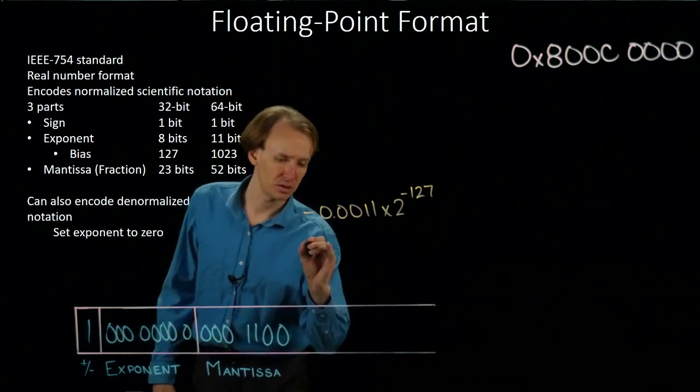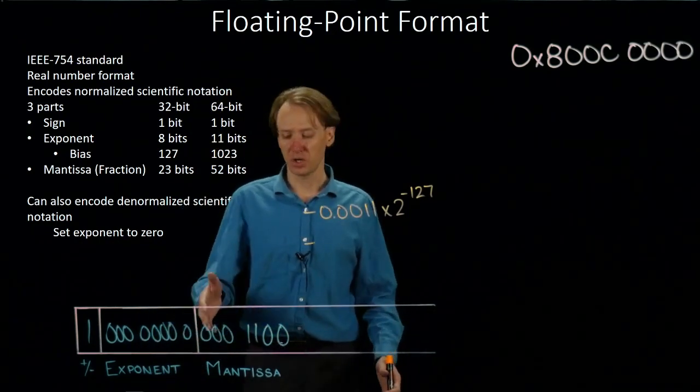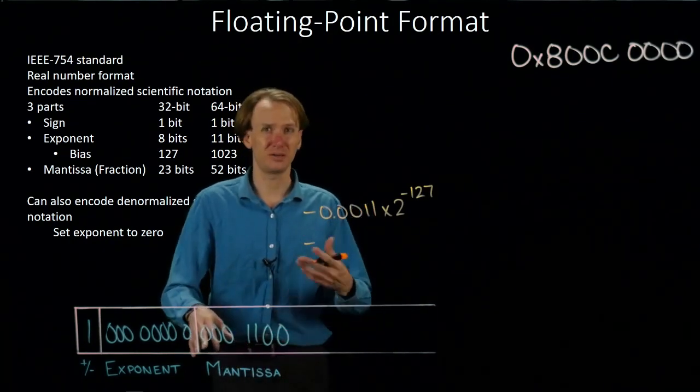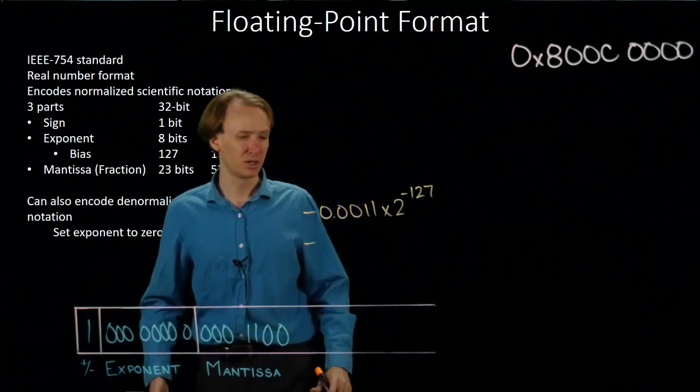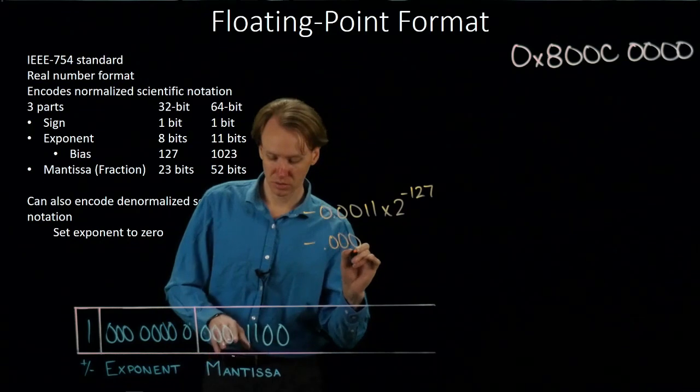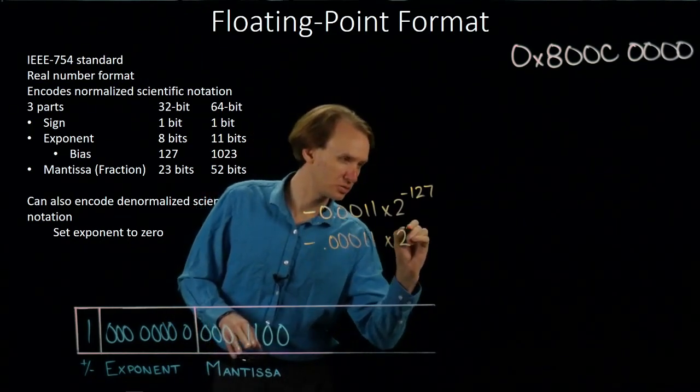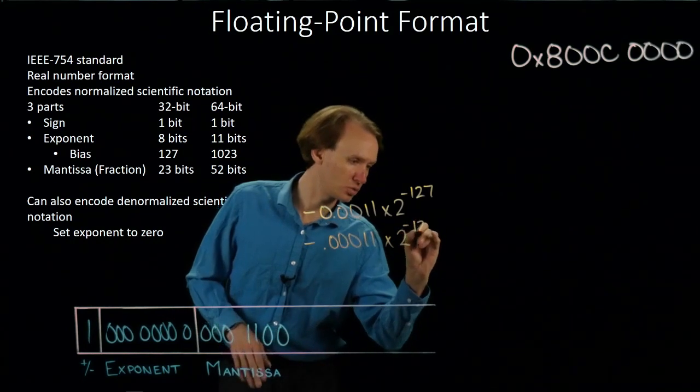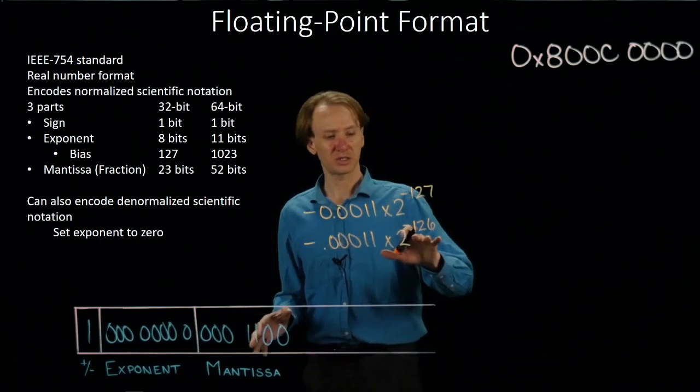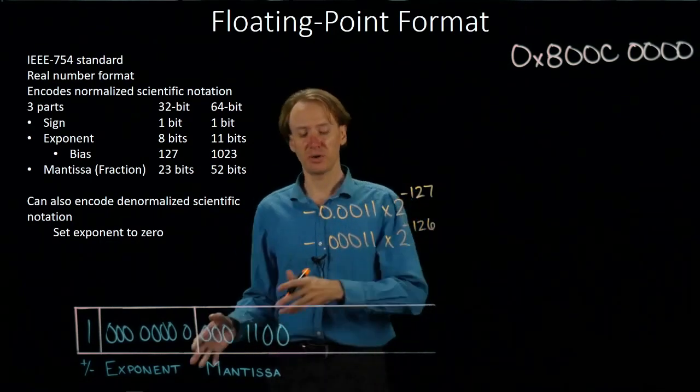Alternatively, I could say I don't know what the leading bit in my number is, but I just want to leave everything as mantissa. I don't want to try putting one bit in front of the binary point. Then I'd have 0.00011 times 2 to the negative 126. So in this case, my exponent is one larger, but I don't place the first bit in front of the binary point.